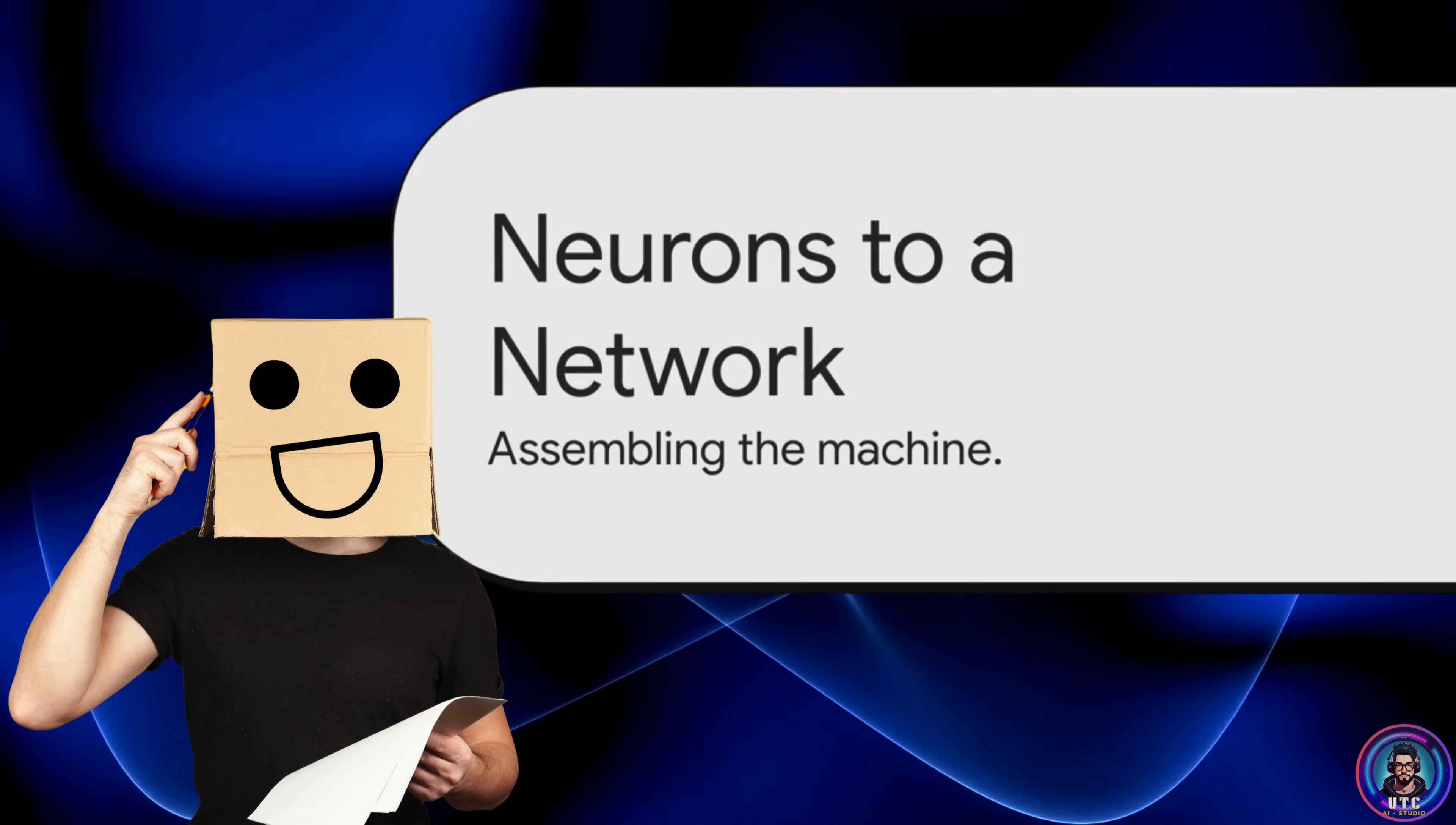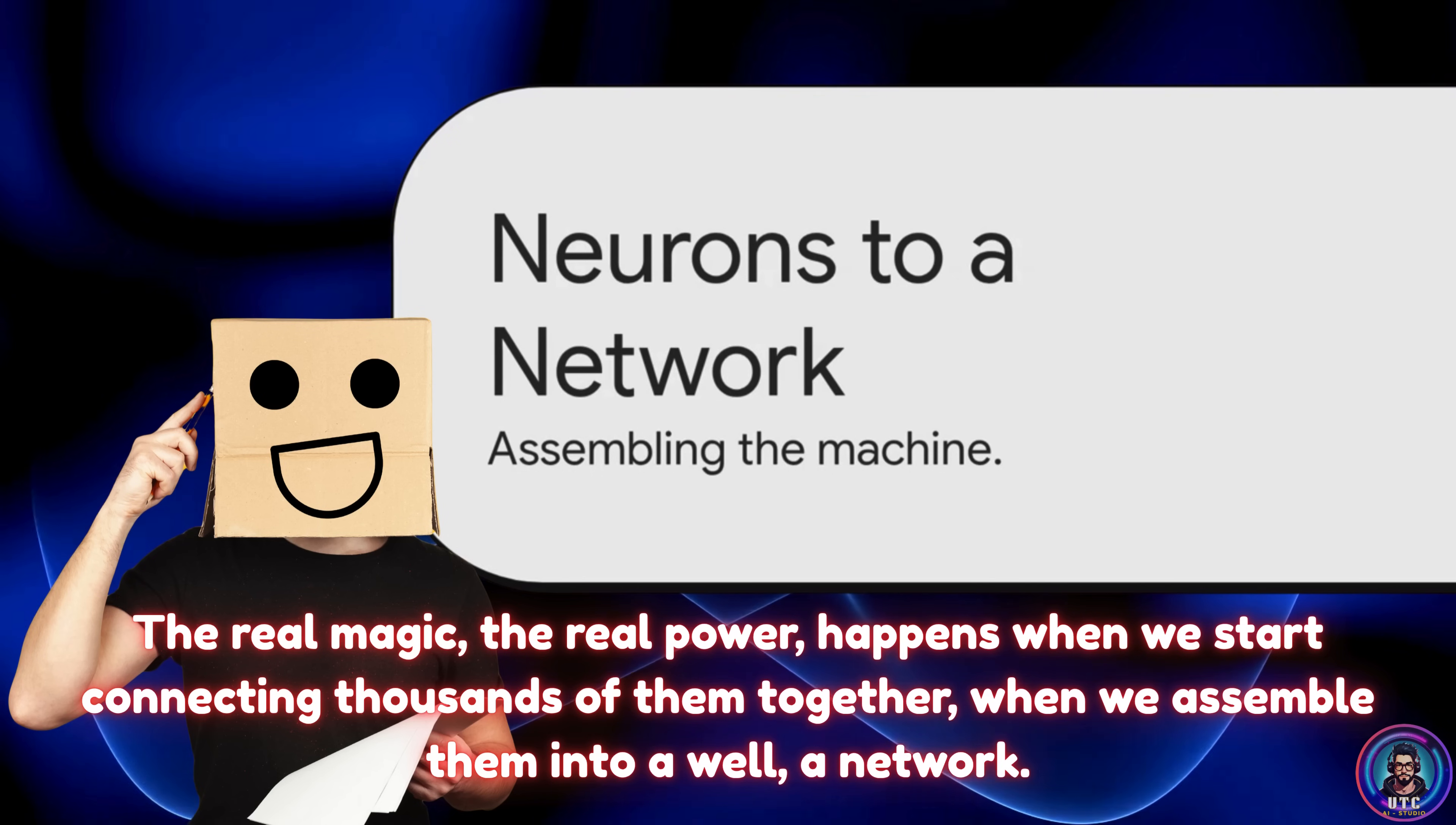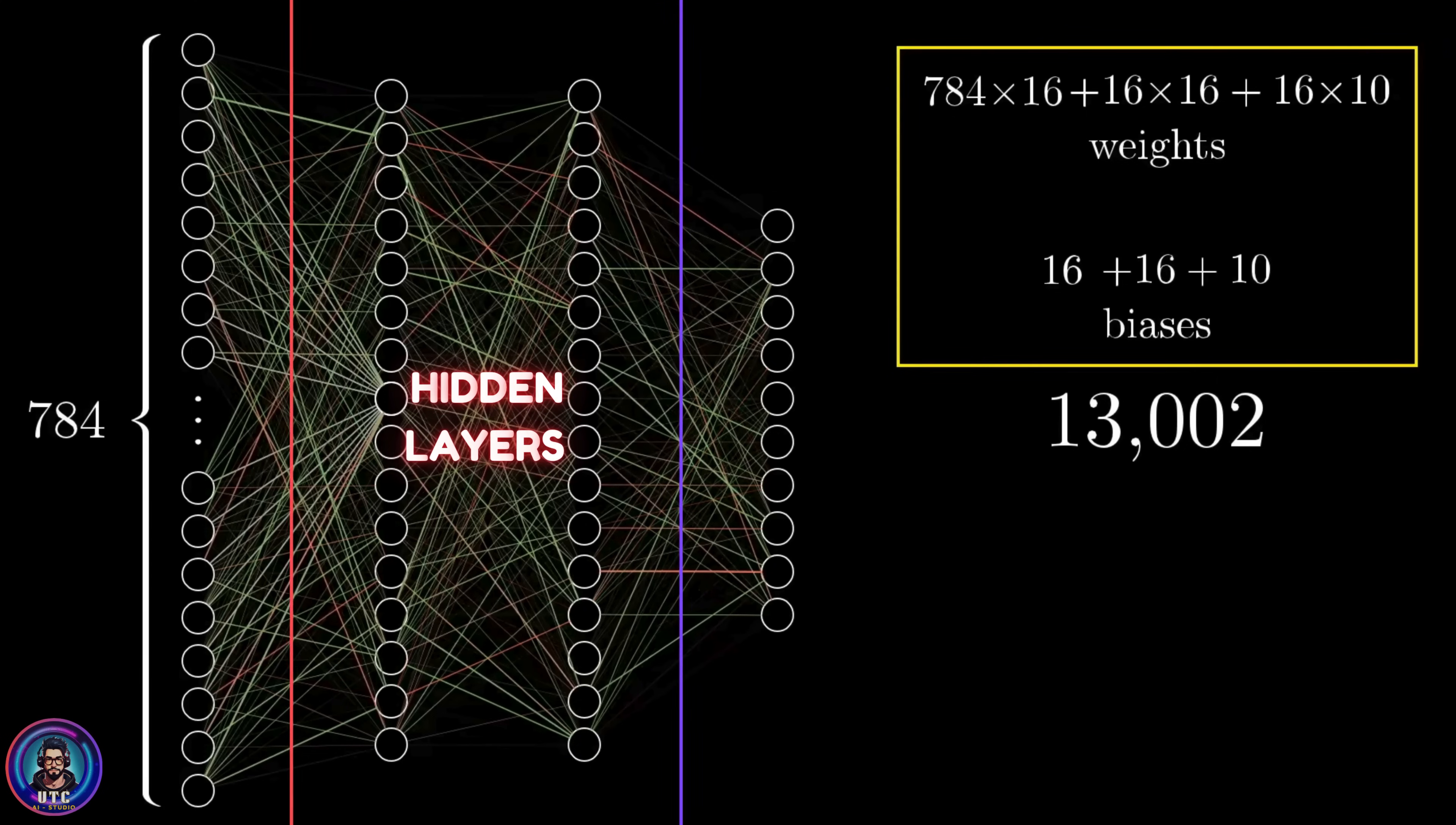All right, so we get it. One neuron is one tiny decision maker. But obviously, one of these little guys can't recognize a handwritten number on its own. The real magic, the real power, happens when we start connecting thousands of them together, and when we assemble them into a network. A typical neural network has this really clean layered setup. It all starts with the input layer. This is just where the raw information gets fed in. For us, that's the brightness value for every single one of those 784 pixels. Then at the very end of the line, you've got the output layer. This is what spits out the final answer. But the really interesting stuff, the real magic happens in the middle, in what we call the hidden layers. This is where the network actually starts to figure stuff out and find patterns.